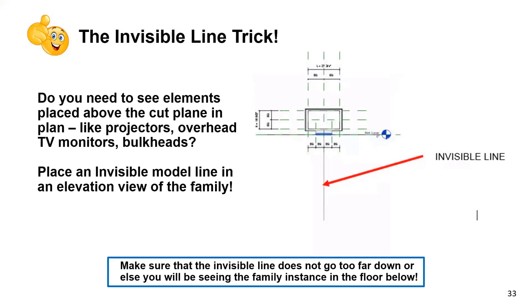The invisible line trick is one of my absolute favorites — great for bulkheads, overhead monitors, entertainment and retail projects. In the monitor family, I drop an invisible line in the front view — just long enough to touch the cut plane of the view. I tell the geometry not to be visible in plan, and place symbolic lines in the reference view of the family so that in plan all you see is the footprint of the family.